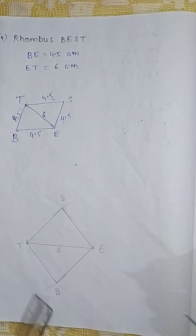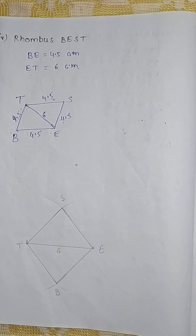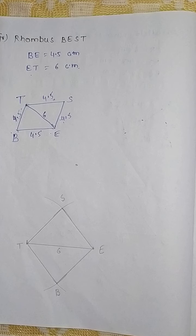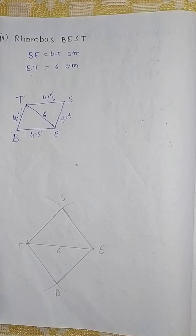This is the required quadrilateral (rhombus BEST). These are the constructions for Part 1. You also need to write the steps as we studied in Class 7. You can write the steps as the process goes on. Thank you so much. If you have any doubts, you can comment in the comment box. Thank you so much, students.